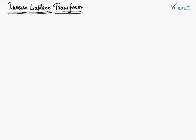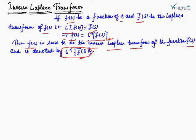In application of Laplace transform, it is often necessary to obtain the inverse Laplace transform of a given function of S. This can be found with the help of results already obtained. We define inverse Laplace transform as: if F(t) is a function of t and F̄(S) is the Laplace transform of F(t), that is L{F(t)} = F̄(S), then F(t) = L⁻¹{F̄(S)}, and F(t) is said to be the inverse Laplace transform of F̄(S), denoted by L⁻¹{F̄(S)}.